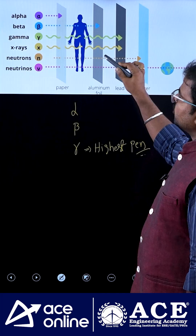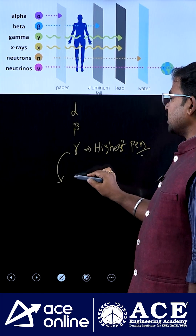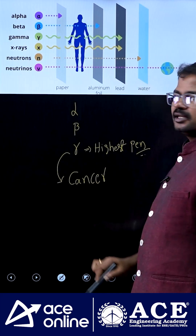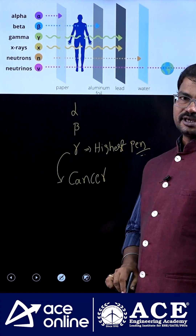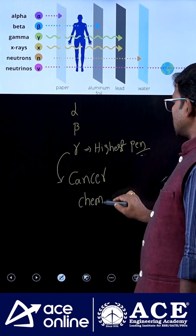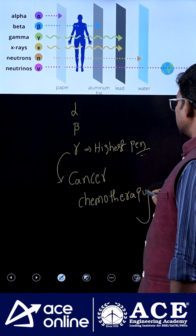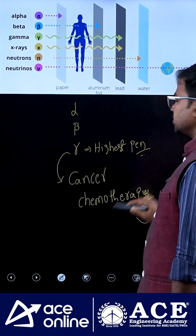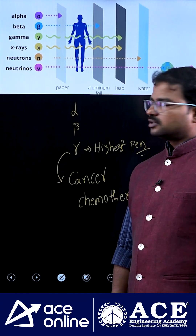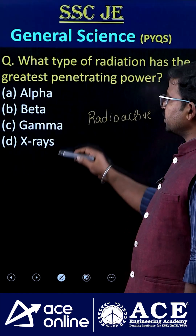You can observe that gamma rays are mostly used in cancer treatment — specifically in chemotherapy. To reduce the size of tumors, we use gamma rays.